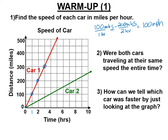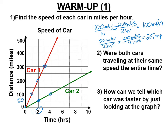The second one, the green one — it's gone halfway to 100, let's say that's 50 miles, in two hours. And it's gone 100 miles in four hours. It's going 25 miles per hour.